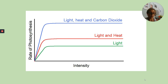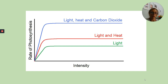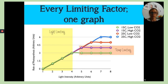With all three factors shown on the same graph, we can see that light intensity alone has a big impact; light and heat together have even more effect; and light, heat, and carbon dioxide together produce the greatest increase in the rate of photosynthesis — up to a certain point, after which they all level off because they are limiting factors.